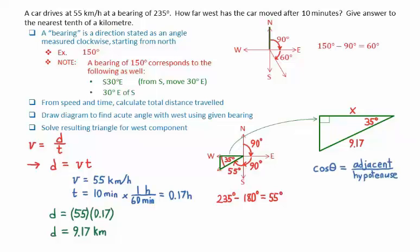We can then say that cosine θ equals adjacent over hypotenuse. Cosine of 35 degrees equals x over 9.17. x then equals 9.17 times cosine 35 degrees. Substituting this into a calculator, we get 7.5 kilometers.